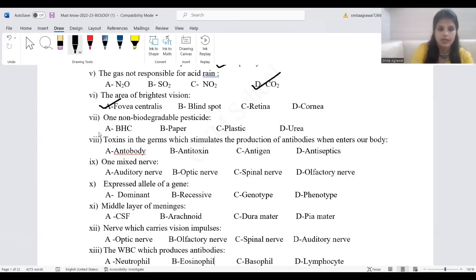Toxin in the germs that stimulate the production of antibodies. The correct answer is antigen. One mixed nerve: spinal nerves are mixed nerves.